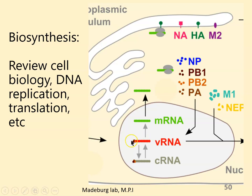Influenza uses those little enzymes to make a reverse complement, and that ends up acting as messenger RNA that is sent out of the nucleus into the cytoplasm. How all of this gets into the nucleus is complicated — the details of how things get into a human cell nucleus are beyond what we're covering here. Anyway, messenger RNA gets pushed out of the nucleus where it can be grabbed by ribosomes.